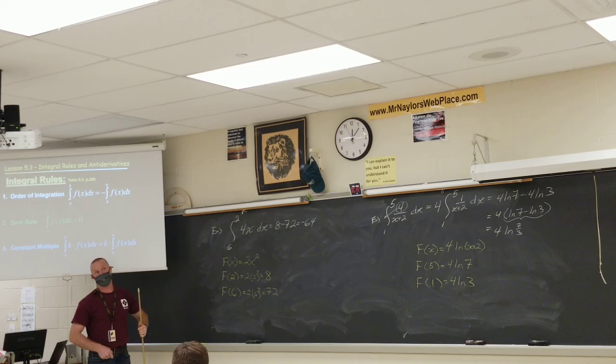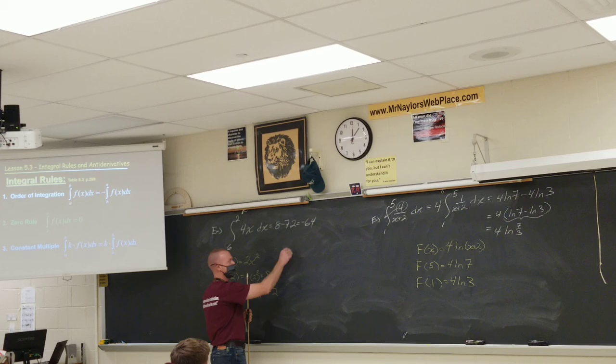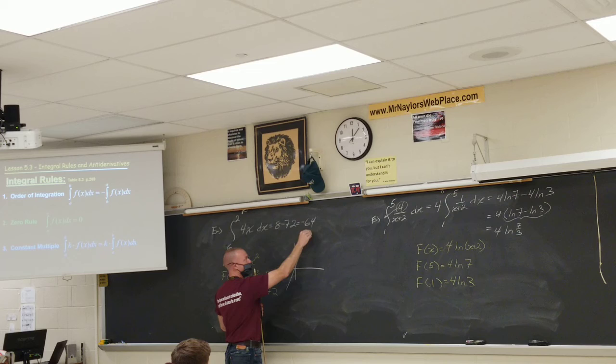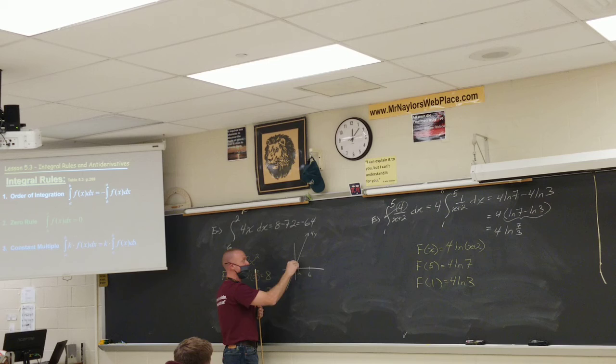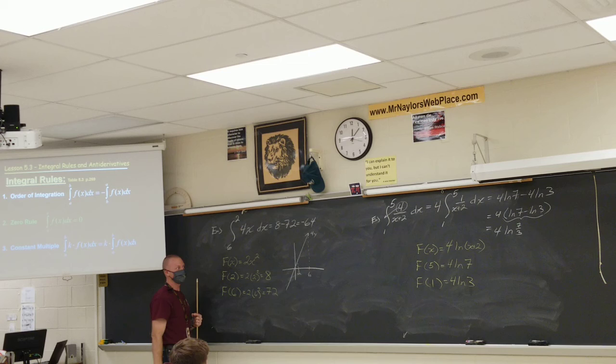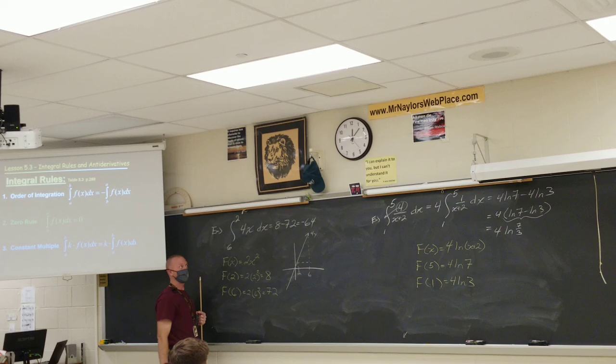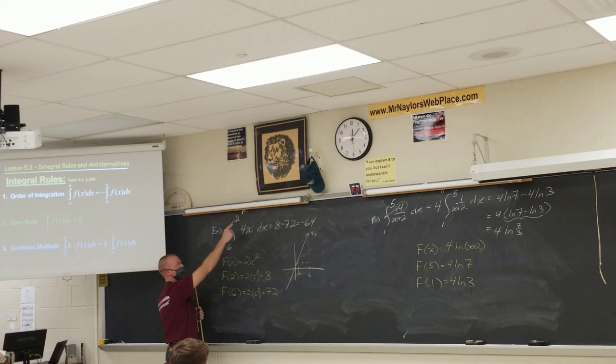But it's because the order has been switched. If you do this problem sort of the old-fashioned way, you'd have to be really careful. Because the old-fashioned way would be to think about a graph of 4x and then to think about the space under this graph. But really, if we do the space under this graph as a trapezoid or maybe as a, you know, rectangle and a triangle, if I do that, I might end up with the answer of 64. Unless I understand that because it's backwards, it's still going to come out to be negative 64.